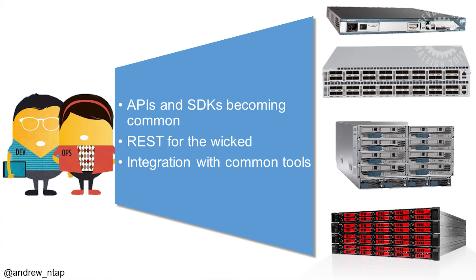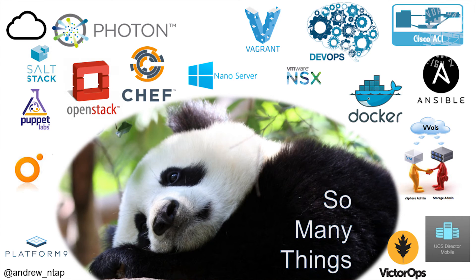Storage, network, and compute resources all have uneven capabilities when it comes to automation and orchestration. But that's changing. Vendors like the one I work for are working to enhance those APIs and SDKs — and not just enabling our own APIs and SDKs, but also enabling them through the tools that hopefully we're already using and familiar with.